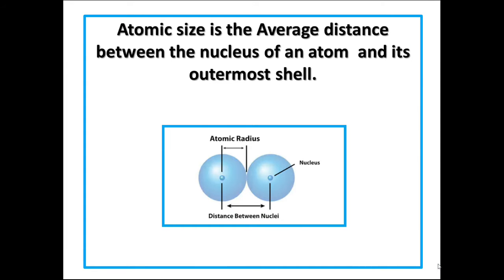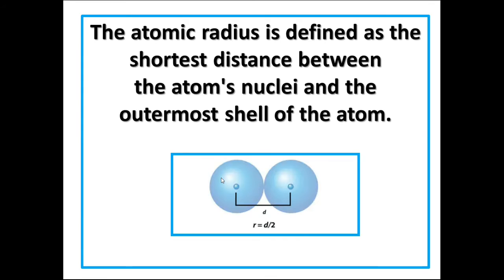Atomic size is the average distance between the nucleus of an atom and its outermost shell. Observe this diagram where the nucleus is present at the center and the outermost shell is the last orbital. This distance is considered as the atomic radius. Atomic radius is defined as the shortest distance between the atom's nucleus and the outermost shell of the atom.